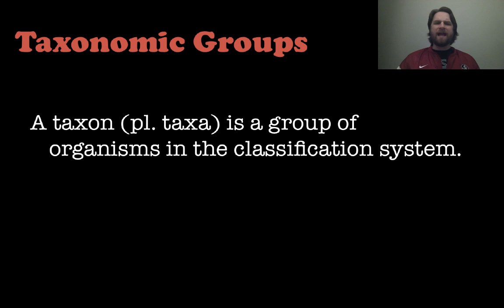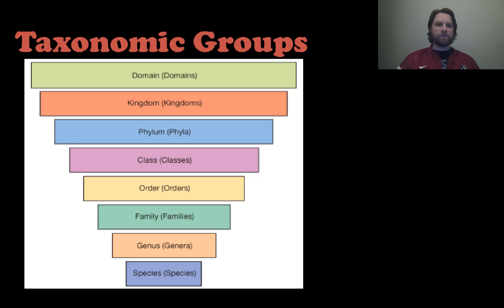First, taxonomic groups. A taxon is a group of organisms in the classification system. The plural for taxon is taxa, just for your information. If we look at our taxonomic groups, they go from domains all the way down to species. Domain is the most broad category and species is the most specific.